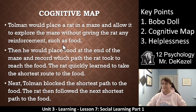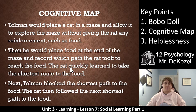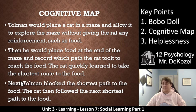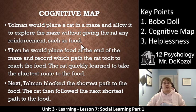Let's talk about the cognitive map. A researcher named Tolman placed a rat in a maze and allowed it to explore without any reinforcement like food — just let it roam. He then placed food at the end of the maze and recorded which path the rat took. The rat was very quick to learn the shortest route. In the next part of the experiment, Tolman blocked the shortest path, and the rat then followed the next shortest path to the food. Essentially, while exploring, the rat had learned the layout of the maze — it had made a cognitive map.